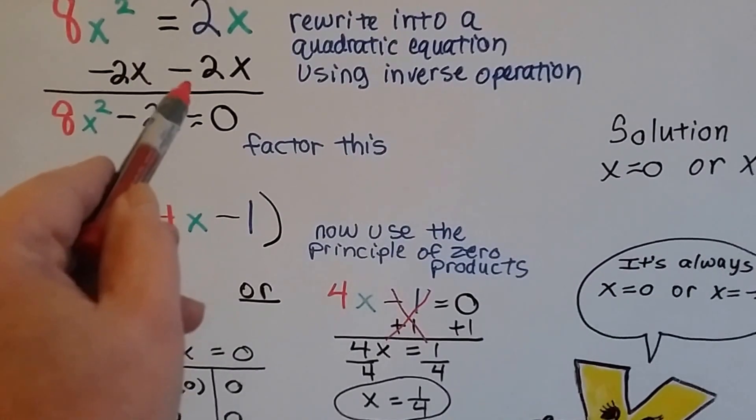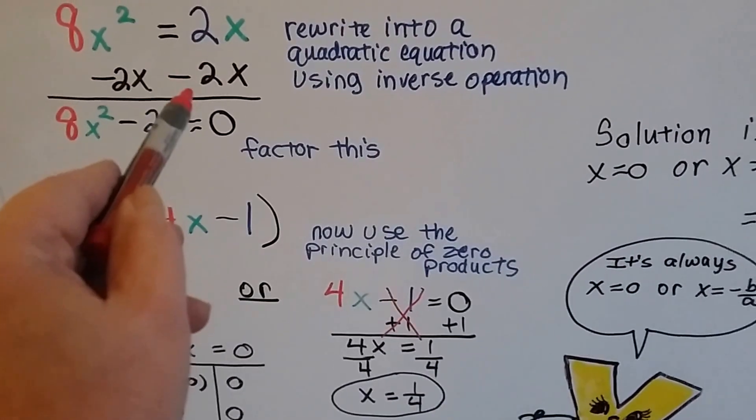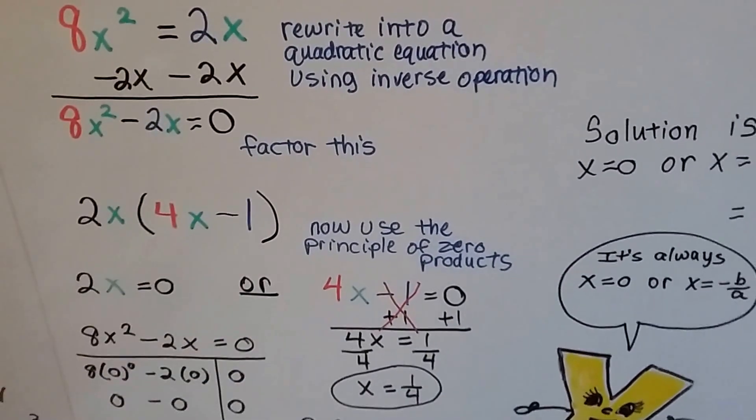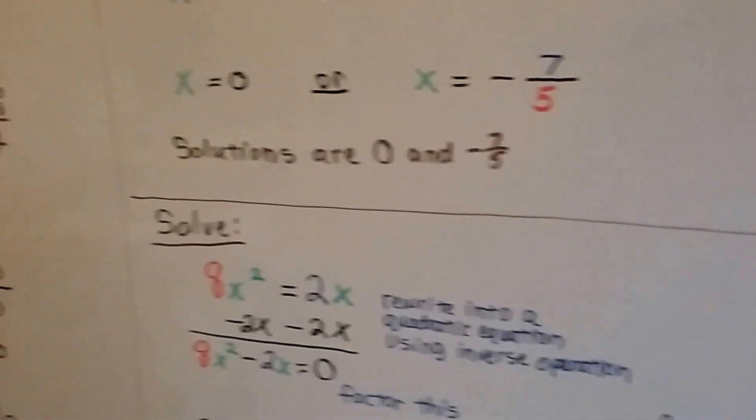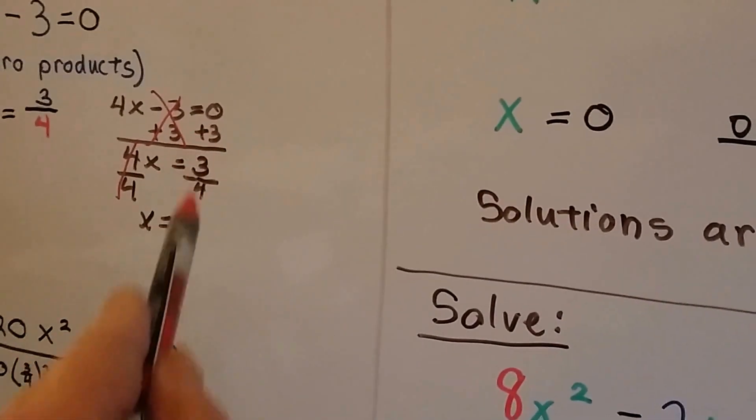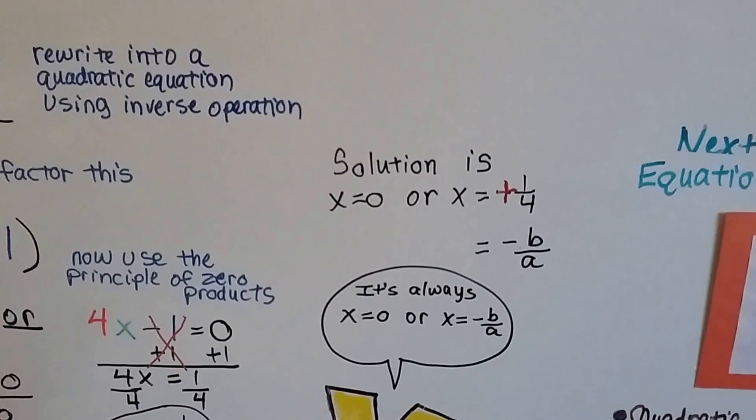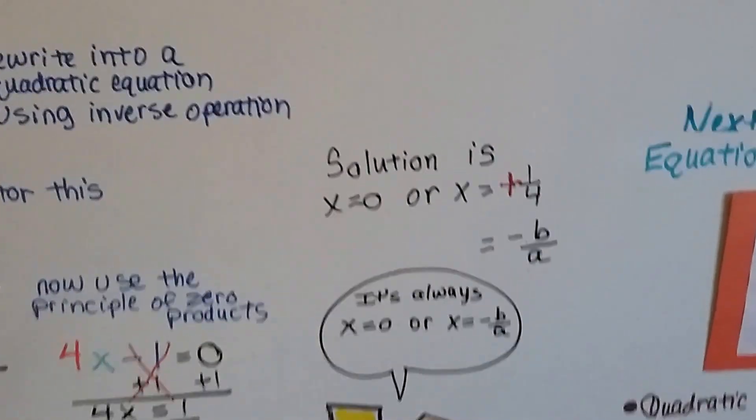When I took away that 2x, it became a negative here. When you had to add, like over here, we had to add the 3, then it became a positive. So it's whatever your inverse operation is going to have you doing.